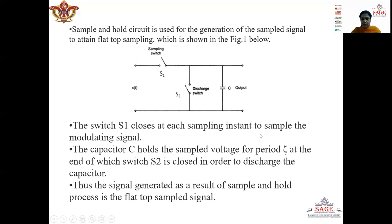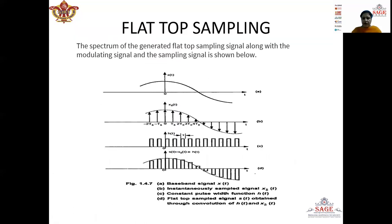This circuit is known as the sample and hold circuit. Here we have seen two waveforms in which waveform A represents the message signal x(t), B represents the instantaneous sample signal, C represents the train of pulses, and D represents the flat top sample signal, which is obtained by convolution of x(t) and x_delta(t).